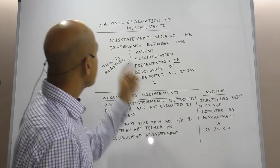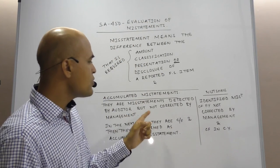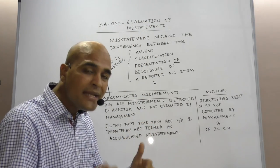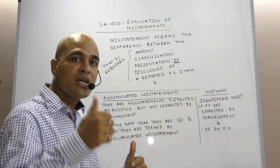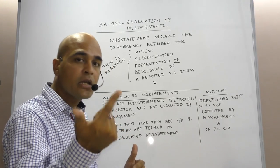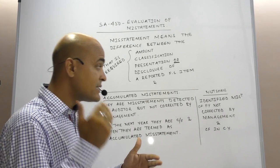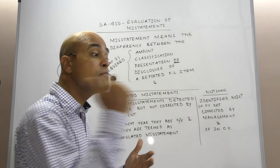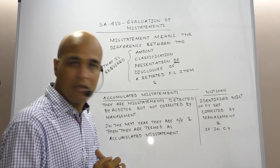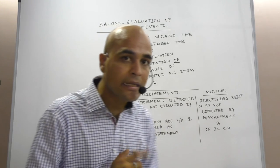Now, this standard SA 450 requires an auditor to accumulate such misstatements which are detected but not corrected by management. Auditor has detected it, auditor has reported it to the management but management has not corrected them.